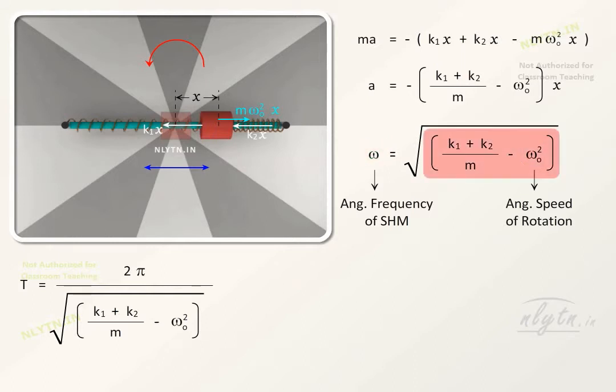Now, from this equation, we can see that this term will be equal to zero for omega naught equal to this term. That is, the time period will be infinite for this value.